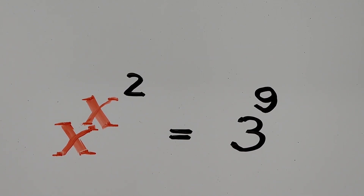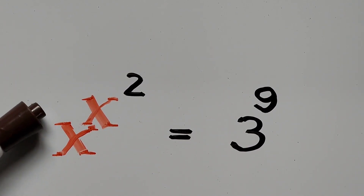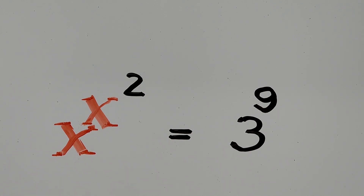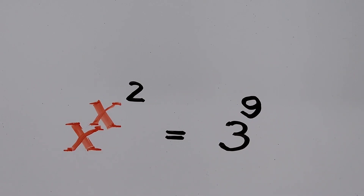Hello everyone, we have the exponential equation x to the power of x squared equals 3 to the power of 9, and here we're looking for the value of x. Probably a lot of you already know how to solve this, and for those who don't, hang on until the end. In this video I'll be presenting two ways to solve for x, and both ways we'll be using the properties of exponents.